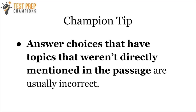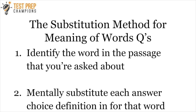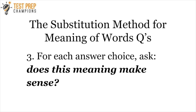Tip number eleven: answer choices that include information, facts, wars, or events not directly discussed in the passage are usually going to be incorrect. Tip number twelve: use what I call the substitution method to beat meaning-of-word questions. Identify the word in the passage that you're asked about, then look at each answer choice and substitute that definition in mentally. Ask yourself, does this meaning make sense in the context of the passage?